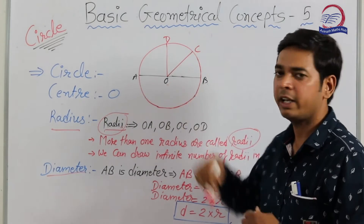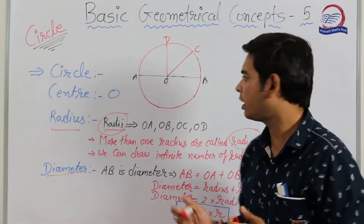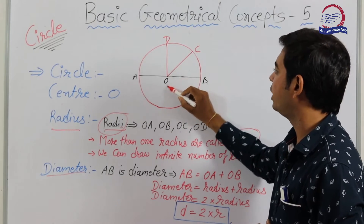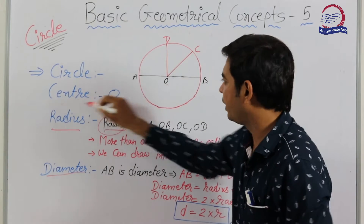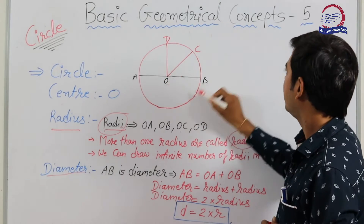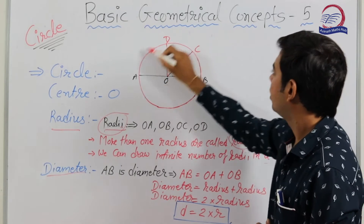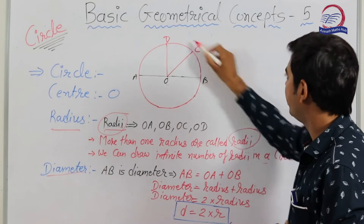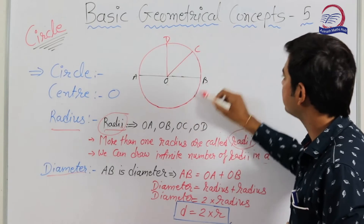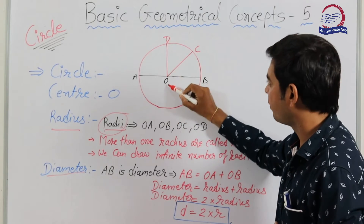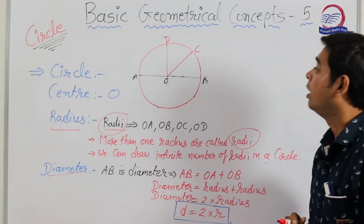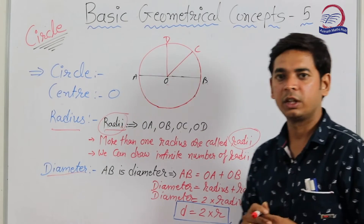In this figure, O is said to be the center of the circle because it is equidistant from all the points on the circle. So O is the center of the circle.